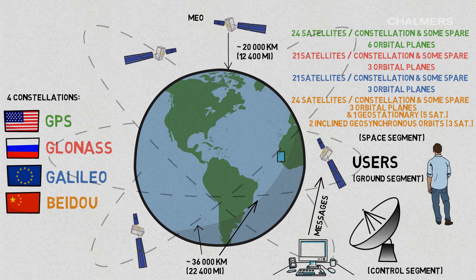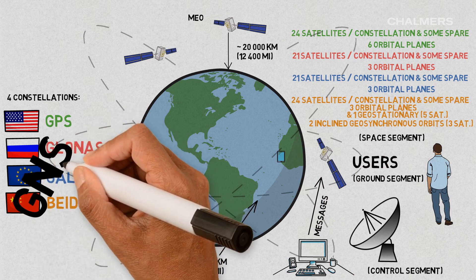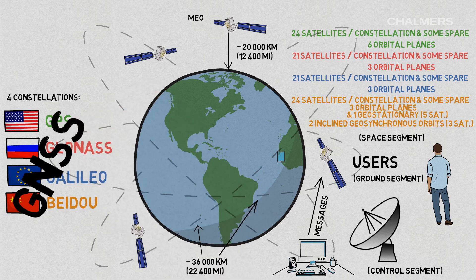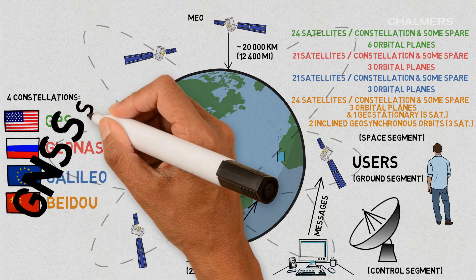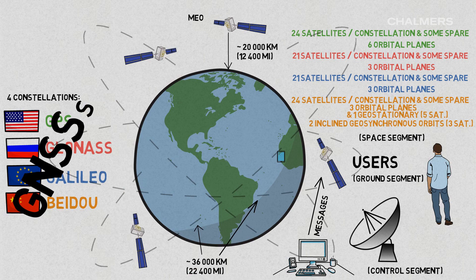Your mobile phone can determine its position based on many global navigation satellite systems. In principle, the more satellites it sees, the better your position is determined.